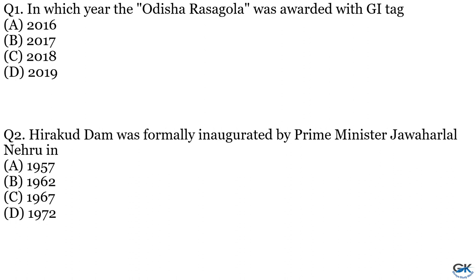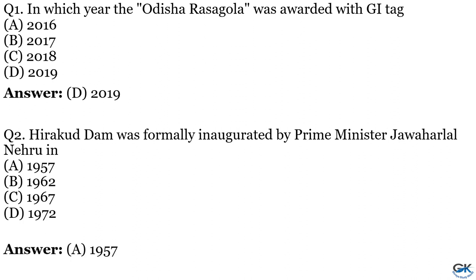Question No. 1: In which year was the Odisha Rasogola awarded with GI tag? The answer is Option D. Question No. 2: Hirakud Dam was formally inaugurated by Prime Minister Jawaharlal Nehru in which year? The answer is Option A.